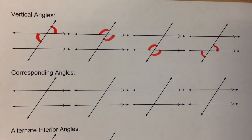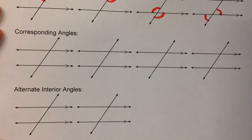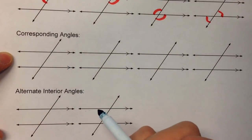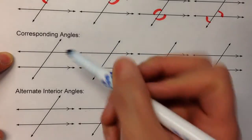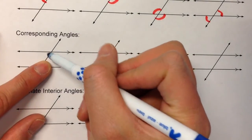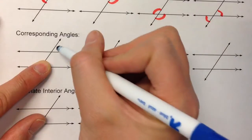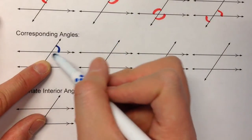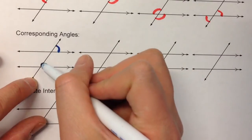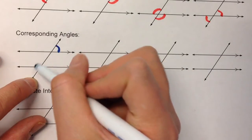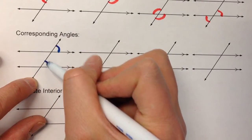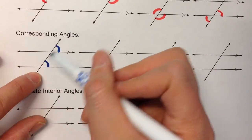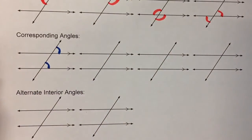But today we learned about three more kinds of angle relationships. Corresponding angles are angles that have matching positions. For example, in this group of four angles right here, this angle is in the upper right corner of that group of four. And down here in this group of four angles, this one's in the upper right corner — so they have matching positions, so they're corresponding angles.